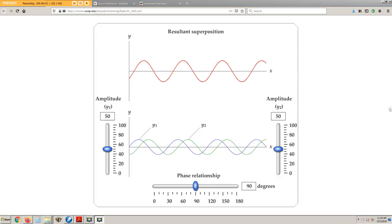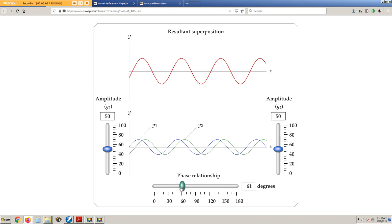The red wave above is the sum of the blue and green waves below. When the green wave is shifted to the left, the red sum increases.